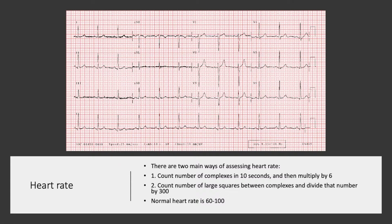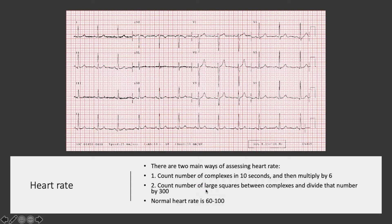The second way to calculate the heart rate is to look at the number of large squares between each of the QRS complexes and then divide 300 by that number. In this case we've got 1, 2, 3, 4 large squares, so dividing 300 by 4 gives us a heart rate of 75. There isn't a massive difference between the two methods, and each one is completely acceptable as long as you pick one and use it properly.